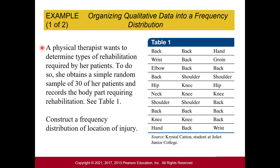Here's our first example. A physical therapist wants to determine the types of rehabilitation required for her patients. She obtains a simple random sample of 30 patients and records the body part requiring rehabilitation. This is the raw data, and we want to construct a frequency distribution of the location of the injury.